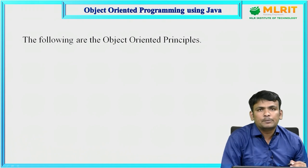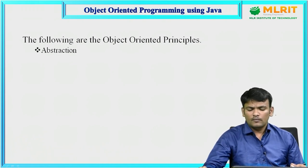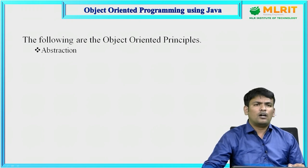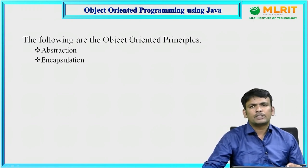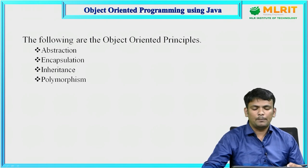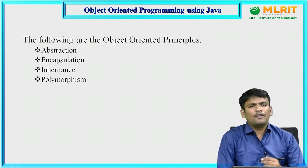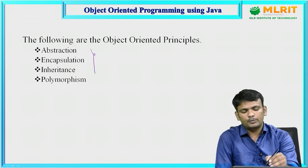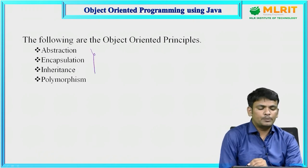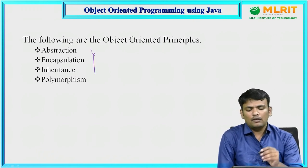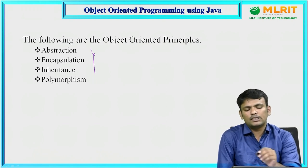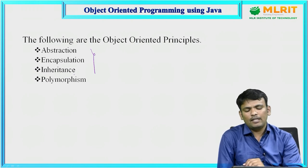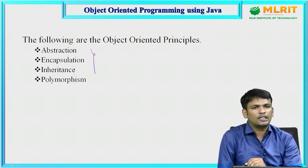Coming to object-oriented principles: we have four — abstraction, encapsulation, inheritance, and polymorphism. If any language supports these four features, it is an object-oriented programming language. Now we will see each one individually.